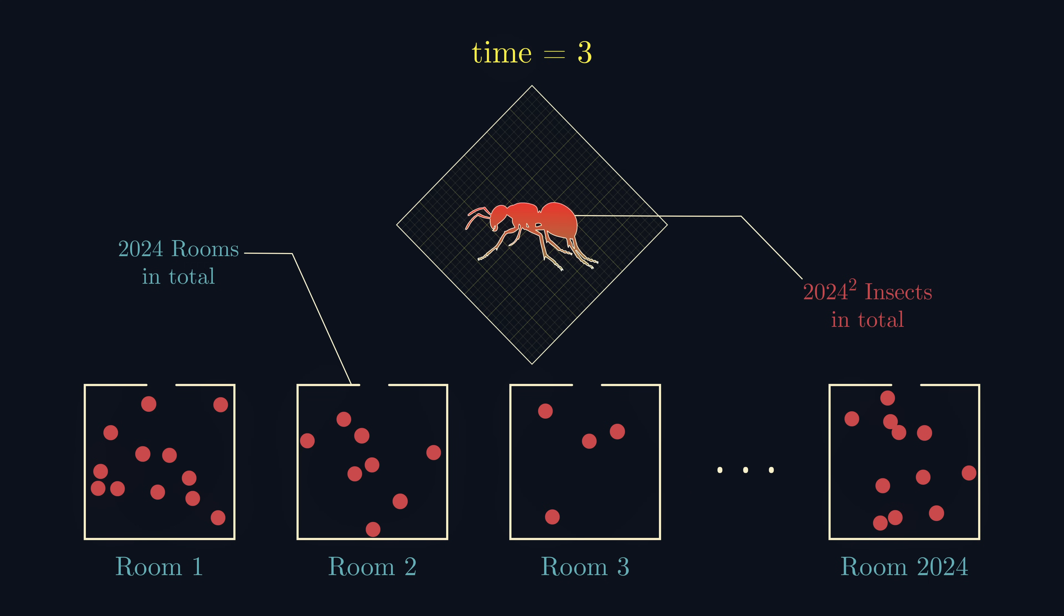The question is simple. What happens to the number of insects in each room over a long period of time?